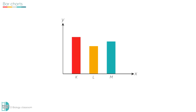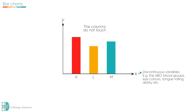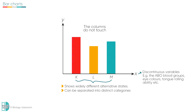Bar charts have separate columns that do not touch — there are gaps in between. They are used to show data on discontinuous variables. For example, the ABO blood groups, eye colors and tongue rolling ability. The variation shows widely different alternative states, and these groups can be separated into distinct categories with no intermediates between them.